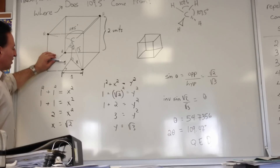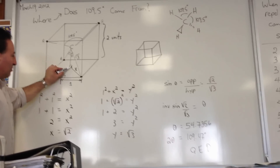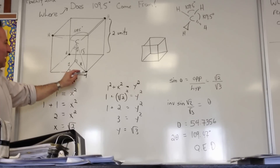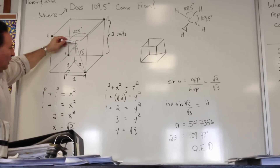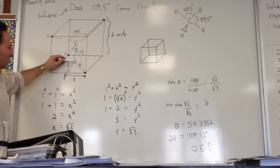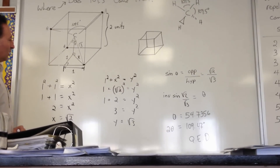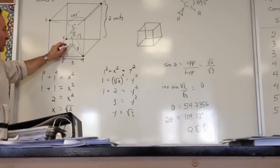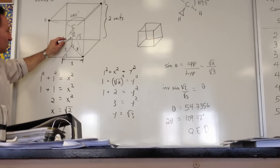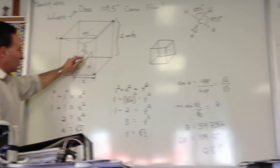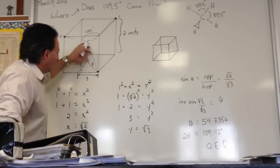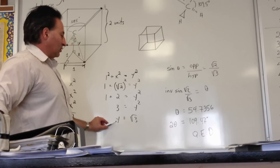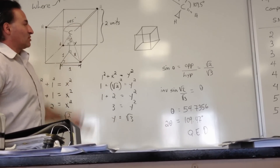Using Pythagoras' theorem, we can say one squared plus one squared equals x squared — giving us x equals root two for the hypotenuse. Then we drop a line from the center of the cube to the center of the bottom, a distance of one representing half the height. Using Pythagoras again at this 90-degree angle: one squared plus x squared equals y squared. Solving for y, we find y equals root three in this cube that is two units high.